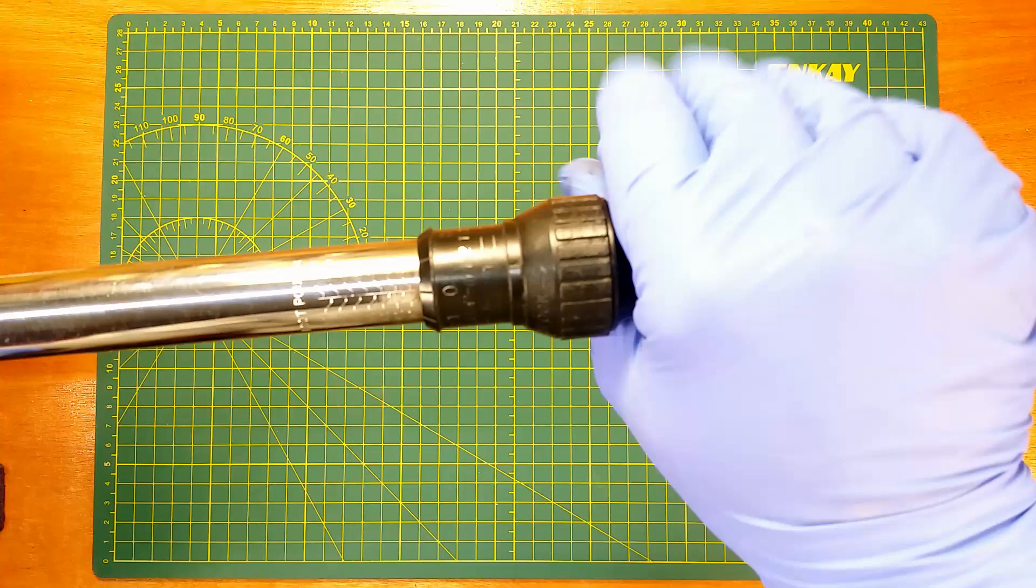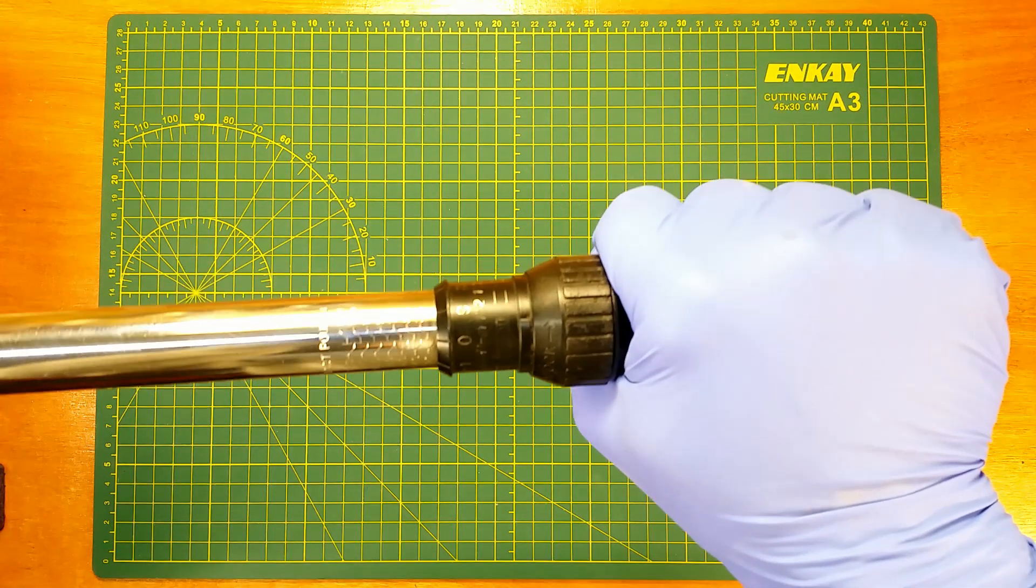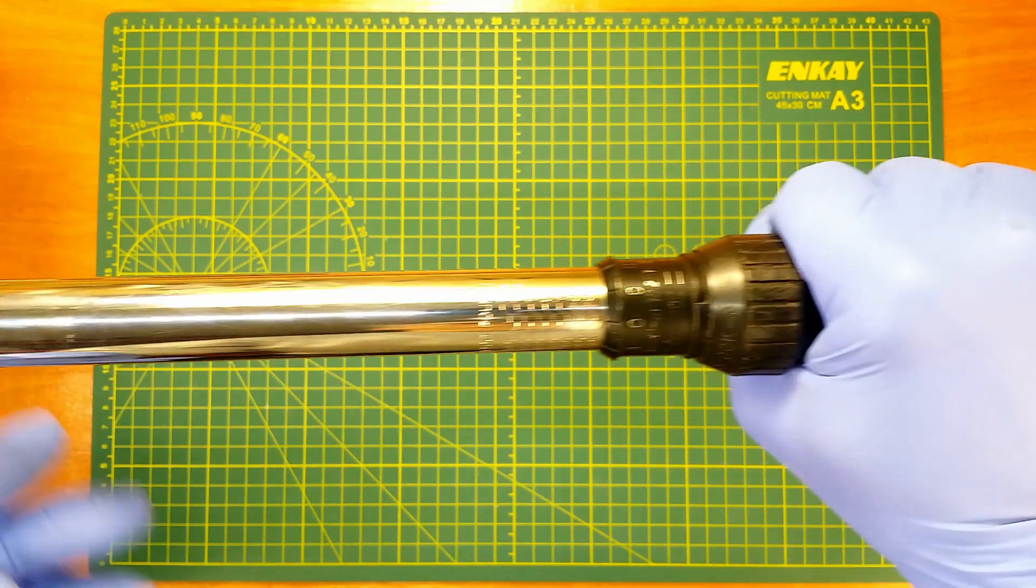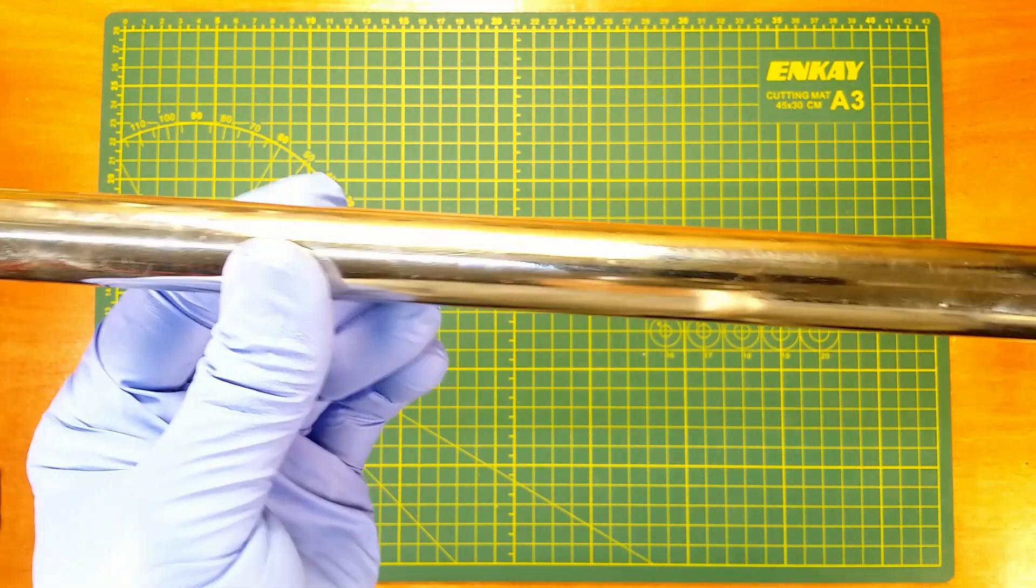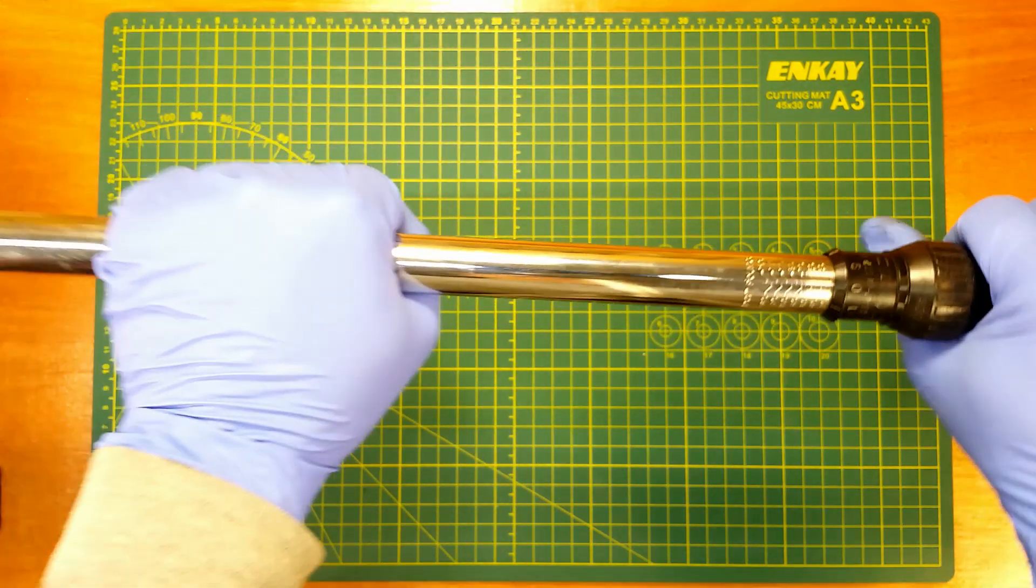Another important thing is that we hold the wrench with one hand only by the handle. Helping yourself with another hand, we will affect the torque.